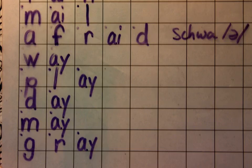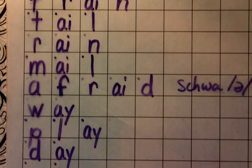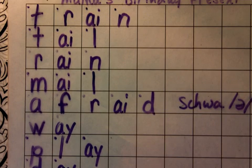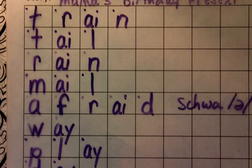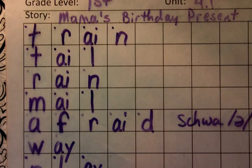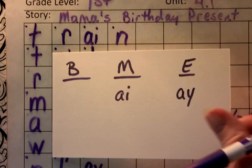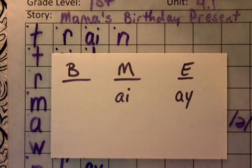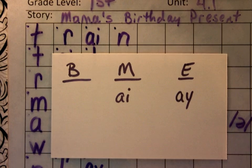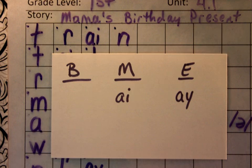All right guys, that's your list for this week. It's the long sound A spelled in two different ways: AI in the middle of a word, and if it's at the end of the word, A is spelled with AY. I hope you have a great week. I hope to see you next time.